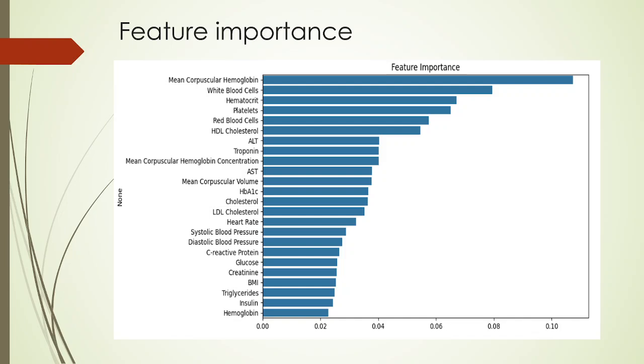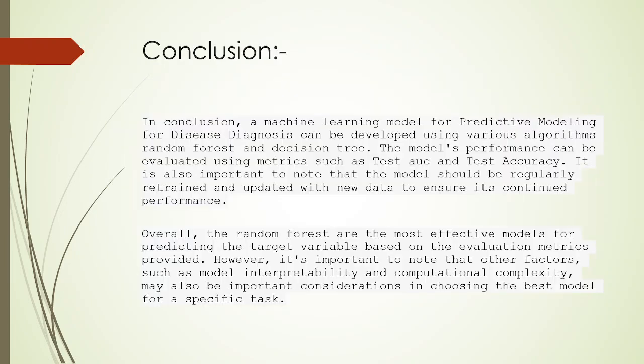In conclusion, a machine learning model for predictive modeling for disease diagnosis can be developed using various algorithms like random forest and decision tree. Random forests are the most effective models for predicting the target variable based on the evaluation metrics provided. However, it is important to note that other factors such as model interpretability and computational complexity may also be important when considering choosing the best model for the specific task. Thank you so much, that's all from my side.